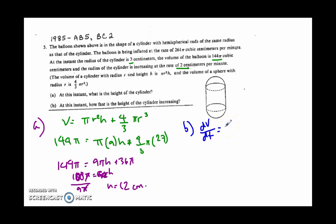So let's do 2 pi r h dr dt plus pi r squared dh dt, and then plus differentiate the sphere, is 4 pi r squared dr dt.